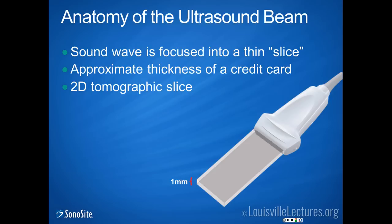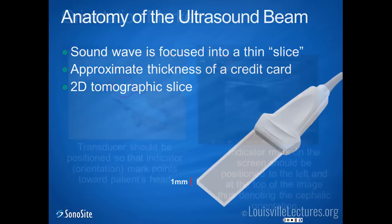One concept that took me a while to understand is that, like a CT scanner, what you're really looking at on an ultrasound image is a tomographic slice. Even though the footprint may be 25 or 60 millimeters as the contact surface on the patient, the actual beam that comes out is pretty much the thickness of a credit card — about a millimeter in diameter. You need to angle it exactly to get the slice you want, and those are the echoes that will come back.